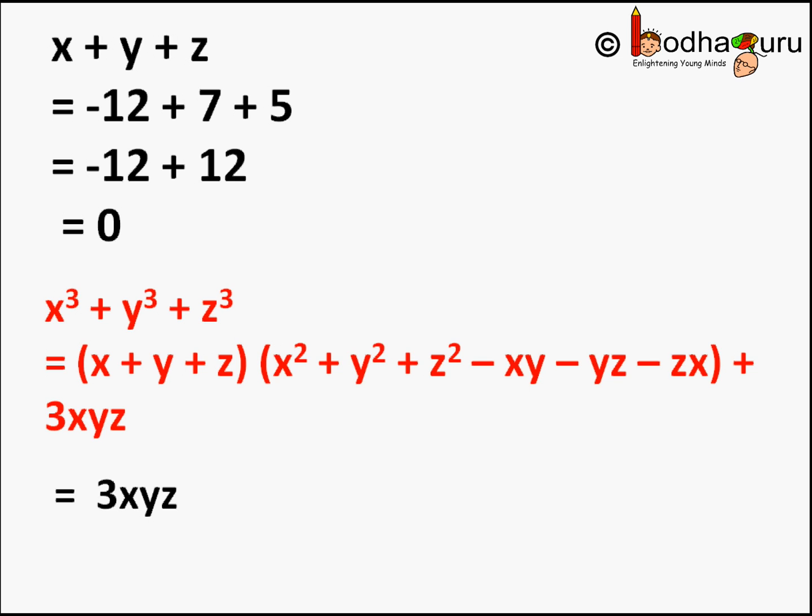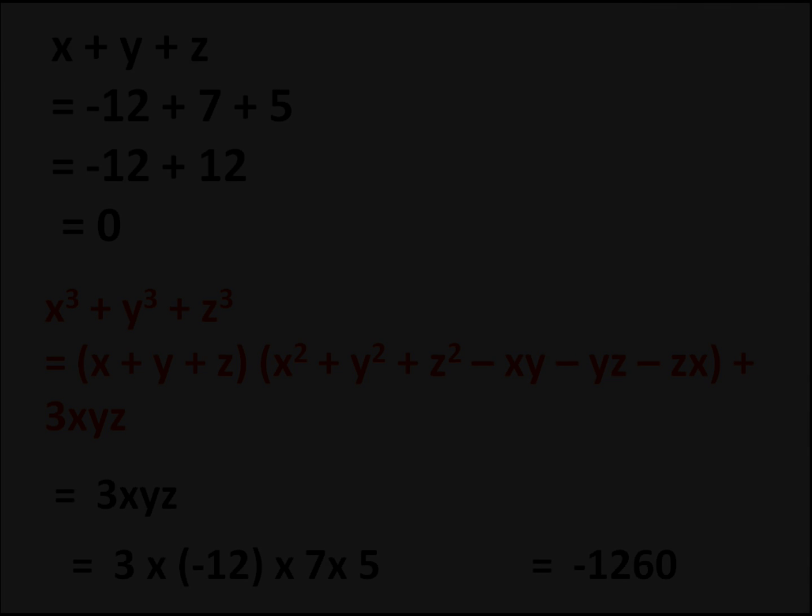So we are only left with the second term, that is 3xyz, which equals 3 × (-12) × 7 × 5. When we solve it, we get -1260. So the final answer is -1260. That's all for now, bye.